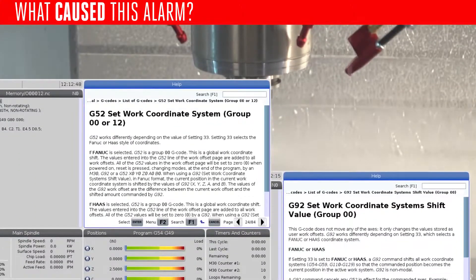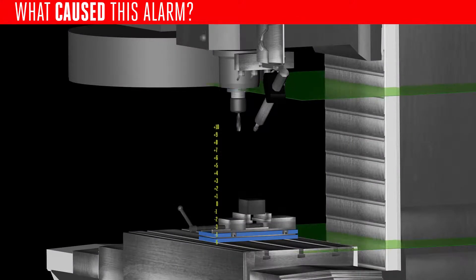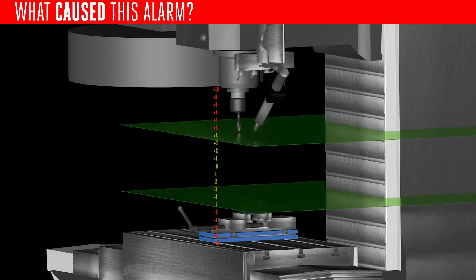This can happen if you're using the additional work offsets G52 or G92. These offsets shift your existing work offsets to a different position.